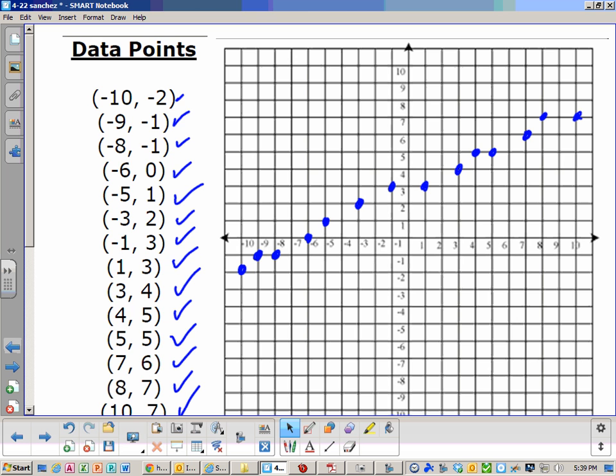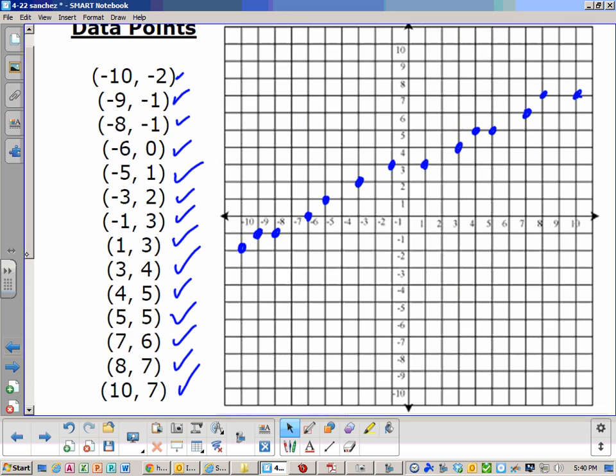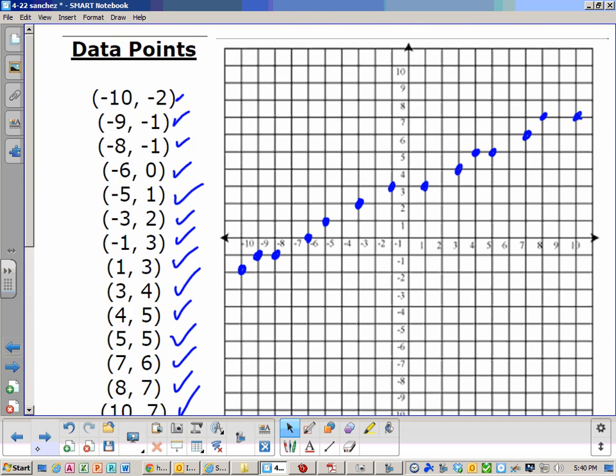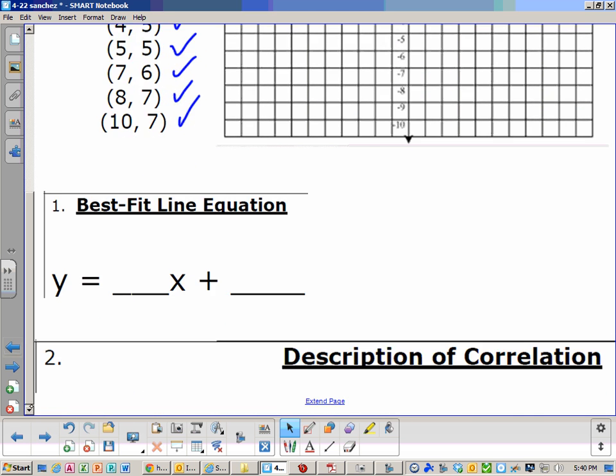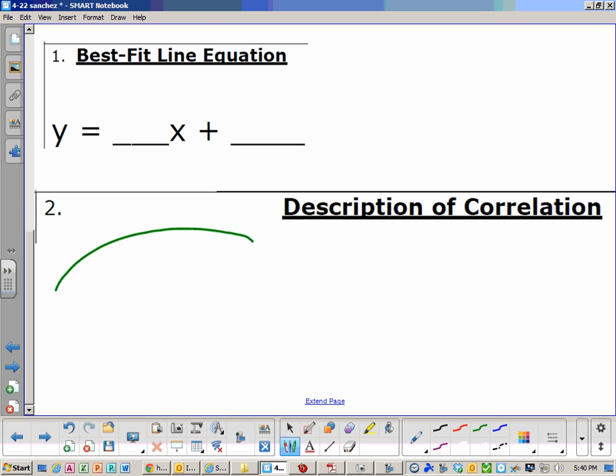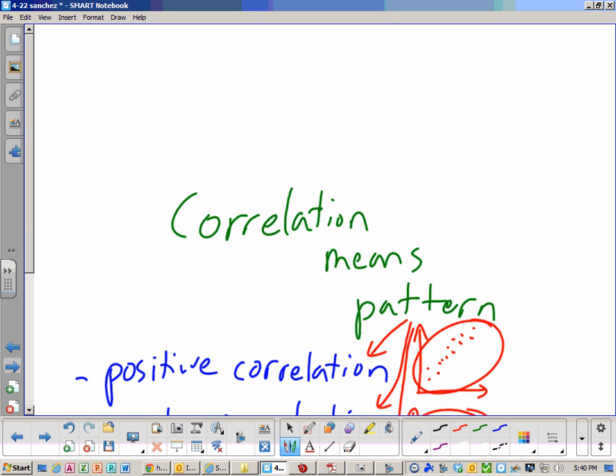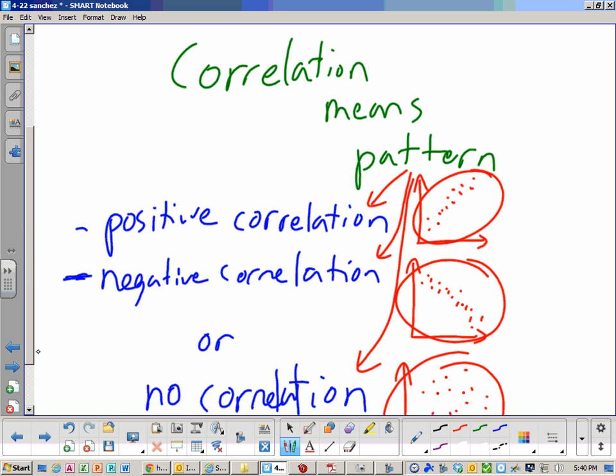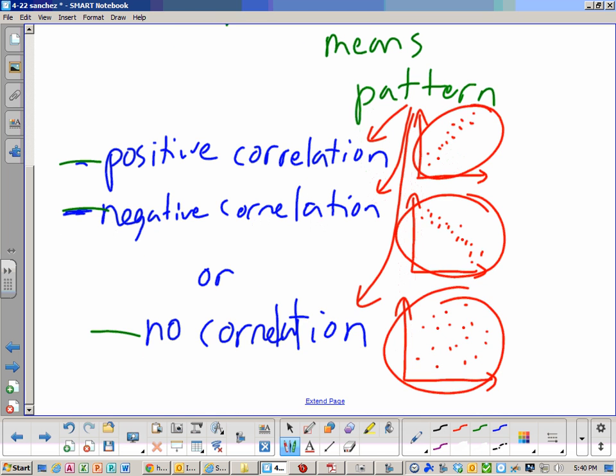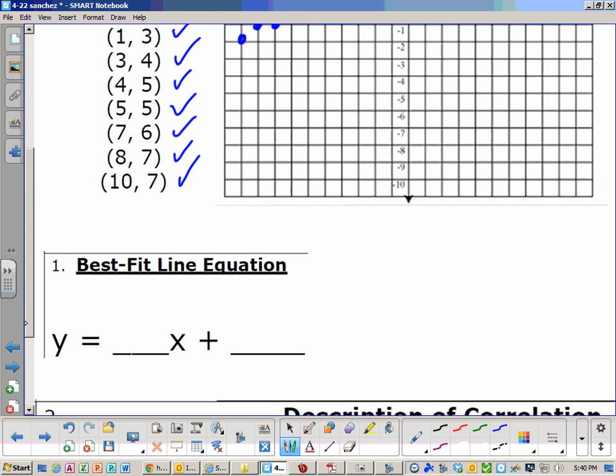Back to the problem here. So as you look right here, ask yourself, what is the pattern here? Positive correlation, negative correlation, or no correlation? And I want you to put that answer right here. What is it? Is it positive, negative, or no correlation? Which type of correlation is it?